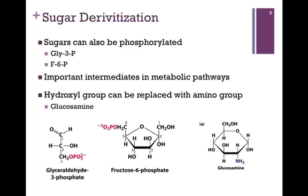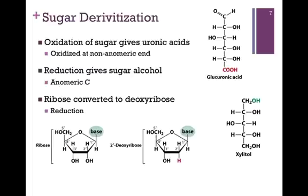Another example of sugar derivatization is on the bottom right, where a hydroxyl group of glucose has been replaced with an amine group to form glucosamine. In this case it's carbon number two that's been modified, not carbon one, so glucosamine would also be a reducing sugar. Yet another way that sugars can be modified is by oxidizing the sugar at an end other than the anomeric carbon, illustrated at the top of the slide in glucuronic acid. We've oxidized that terminal carbon to form glucuronic acid, and we still have that reactive carbonyl at the number one position.